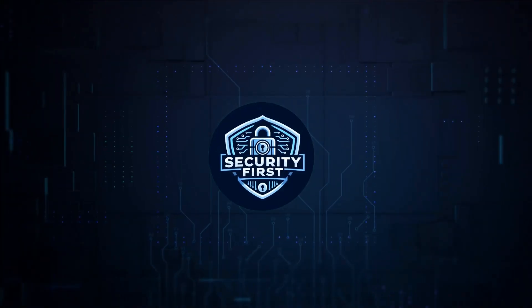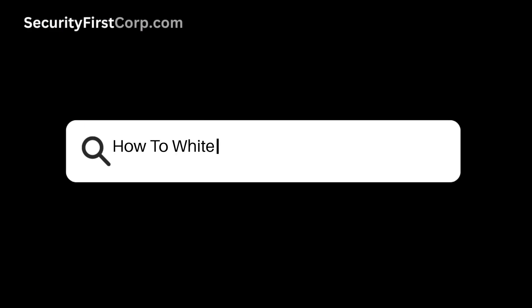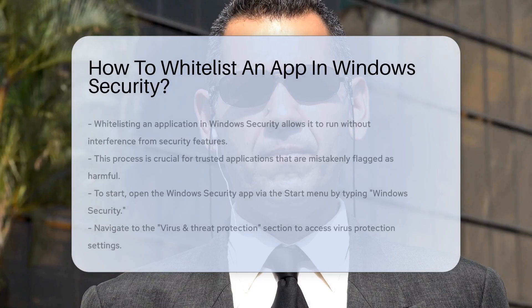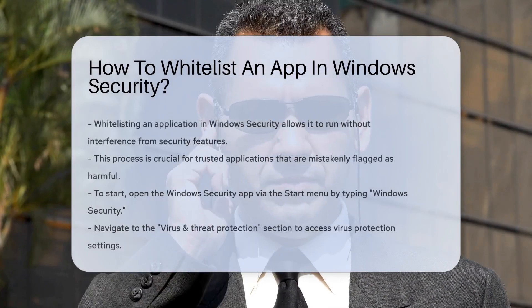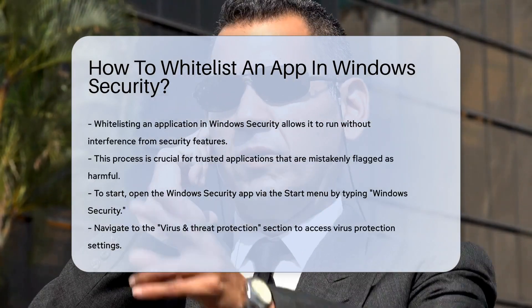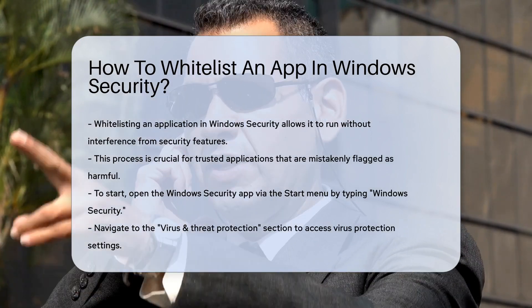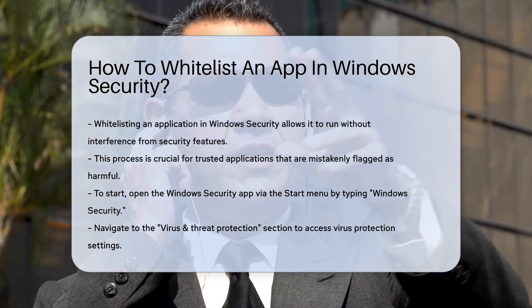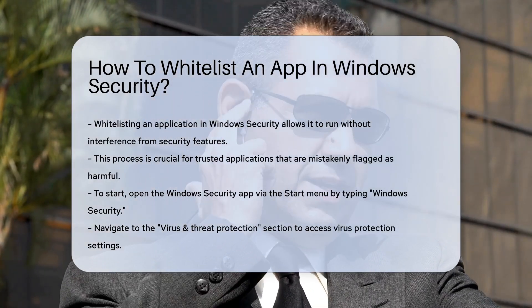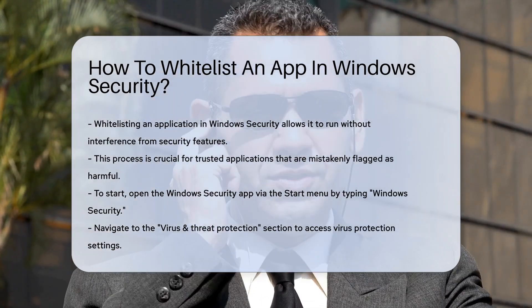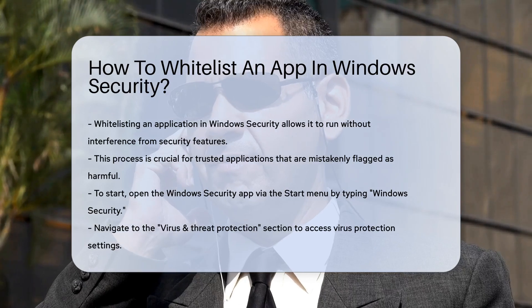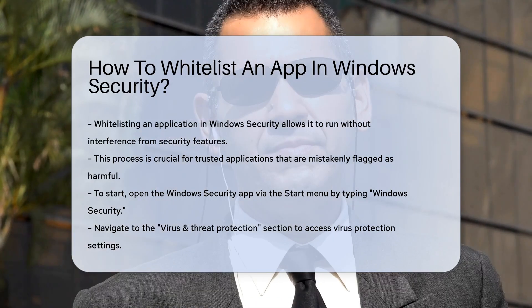Security First Corp. Safety through knowledge. How to whitelist an app in Windows Security? Whitelisting an application in Windows Security allows you to grant it permission to run without interference from security features. This process is essential when you trust a specific application but face issues with it being flagged as potentially harmful.